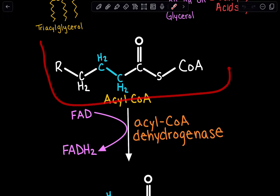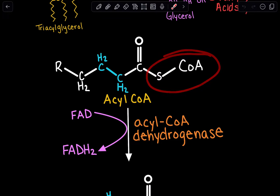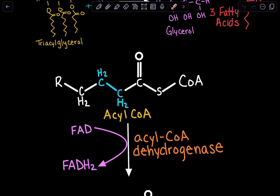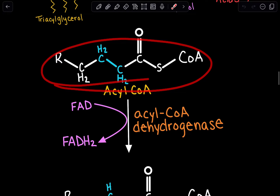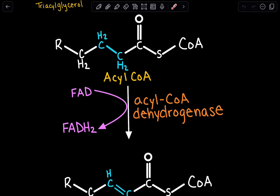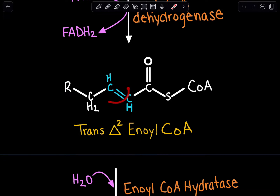In the first step of beta-oxidation, we have our activated fatty acid with our coenzyme A group, the carbonyl, and the R notation. Beta-oxidation is so named because we are manipulating the beta-carbon — we have the carbonyl, then the alpha-carbon, then the beta-carbon. We oxidize our acyl-CoA and in return reduce FAD into FADH2. This step is performed by the enzyme acyl-CoA dehydrogenase — dehydrogenase is involved because whenever we have FAD or NAD, it is often a dehydrogenase enzyme. This oxidation-reduction step gives us a double bond between the alpha and beta carbon, yielding trans-delta-2-enoyl-CoA.